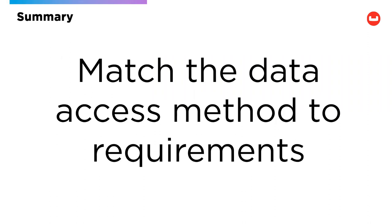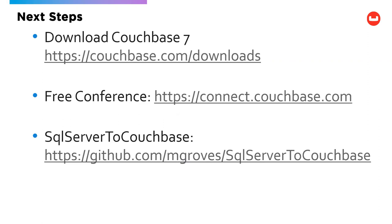Always match data access to the requirements — remember, in the relational world you can only use SQL. With Couchbase, you can use key-value, full text search, SQL, and other methods. Use the one that's the right fit for best performance. For next steps, download Couchbase 7 — just released to GA. The Enterprise Edition is free to download and try out, great for larger applications. There's also a free community edition for smaller applications, and a free completely online Couchbase Connect conference with much more detail on topics covered today at connect.couchbase.com.